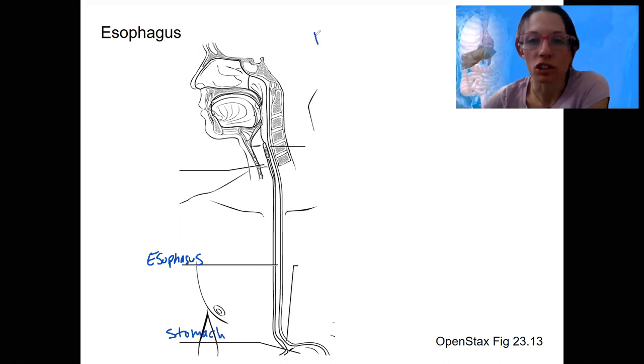The role of the esophagus is just propulsion. We're trying to get food from the oral cavity into the stomach. That's the goal.